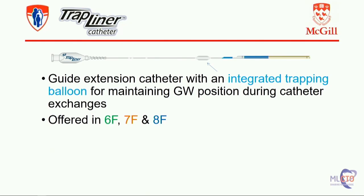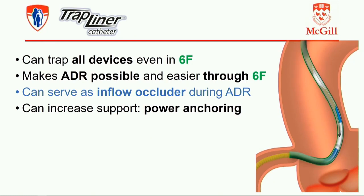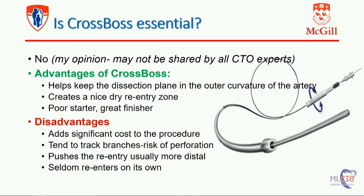What will be a factor of hematoma is large inflow from balloon dilation and injections. It has evolved and been widely adopted in practice that the trap liner has been an extremely helpful tool to prevent hematoma formation. Because you can trap all devices in 6 French with the gut extension, it serves as an inflow occluder during your ADR, so you prevent filling the subintimal space with blood. It makes ADR possible even in 6 French, and you can increase support by power anchoring. You can also use it retrograde — I'm just focusing on the antegrade ADR part of it.